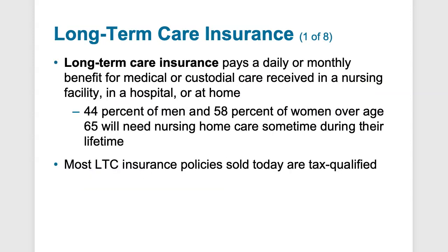Long-term care insurance covers nursing homes, hospital stays, or at-home care — a very expensive component of healthcare needs. Nursing home costs can be $8,000–$10,000 per month. According to statistics, 44% of men and 58% of women over age 65 will need nursing home care sometime during their lifetime. Most standard insurance policies may not cover this, so a long-term care insurance policy is a beneficial additional policy to have. Nursing home costs can wipe out a person's savings — even $1 million could be depleted within 10 years.